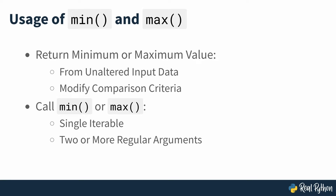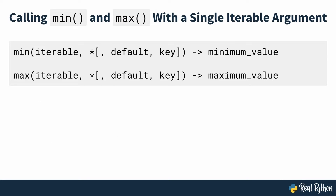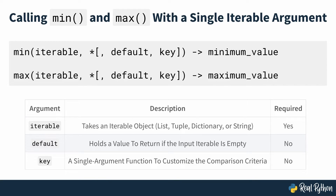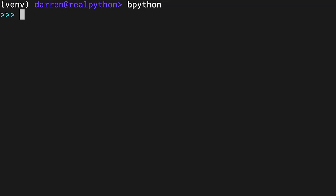The built-in min and max have two different signatures that allow you to call them either with an iterable as their first argument or with two or more regular arguments. Both functions take a required argument called iterable and return the minimum and maximum values respectively. They also take two optional keyword-only arguments, default and key. The asterisk means that the following arguments are keyword-only arguments, while the square brackets denote that the enclosed content is optional. For now, just focus on the iterable argument, which is a required argument that leverages the standard behavior of min and max in Python.